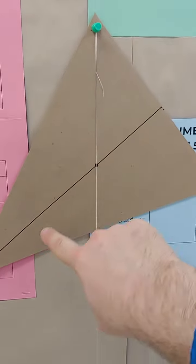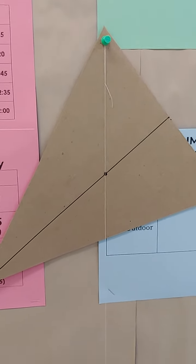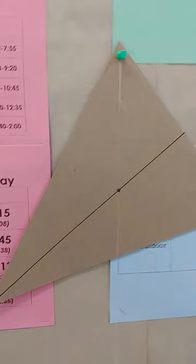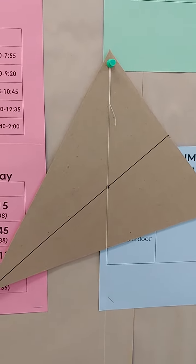And the place where our plumb bob crosses our original line that we had from the first hanging point has to be where the center of mass is. And we can verify this by hanging it from a third point. Let me get that set up so we can show that this really works.